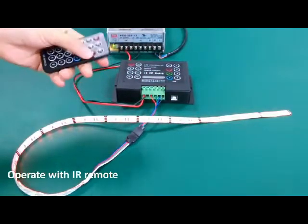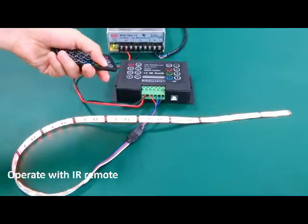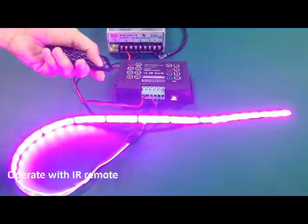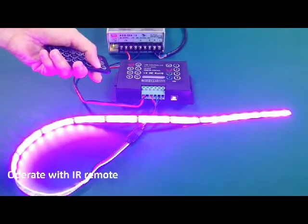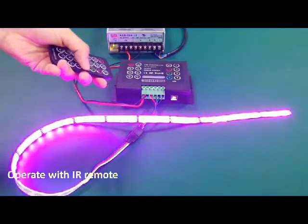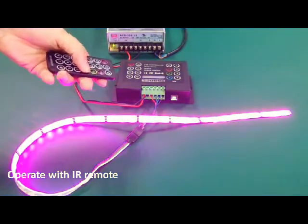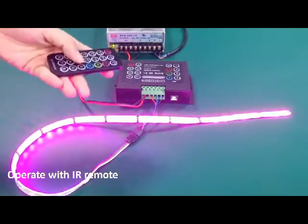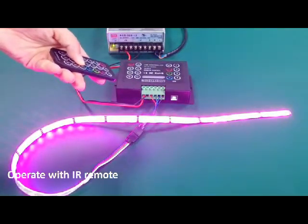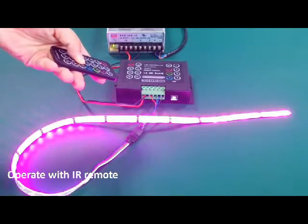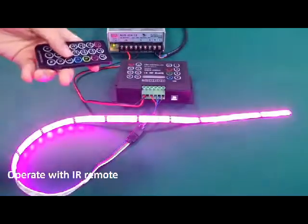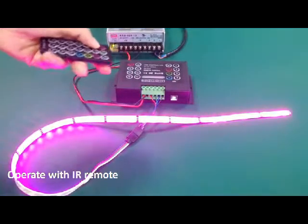Now we set the RGB color. Press 1. It is set. Now we turn to other mode.